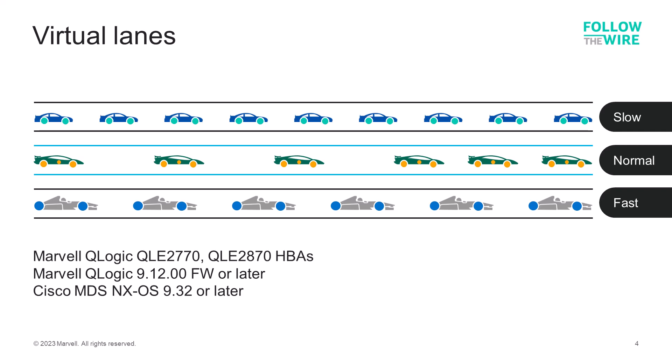Virtual lane functionality is supported on Marvell Q-Logic 2770 and 2870 series enhanced 32-gig fiber channel and 64-gig fiber channel HBAs, along with Cisco MDS switches running NXOS 9.32 or later. Check with your Broadcom representative as to when virtual lane capability will be enabled on Brocade fiber channel switches and directors.